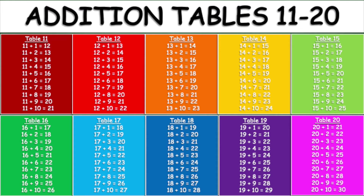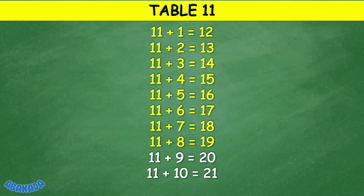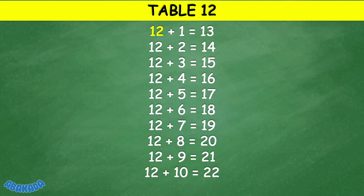Abacada Addition Tables 11 to 20. Table 11: 11 plus 1 equals 12, 11 plus 2 equals 13, 11 plus 3 equals 14, 11 plus 4 equals 15, 11 plus 5 equals 16, 11 plus 6 equals 17, 11 plus 7 equals 18, 11 plus 8 equals 19, 11 plus 9 equals 20, 11 plus 10 equals 21.